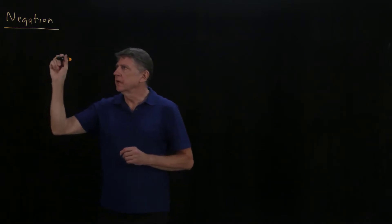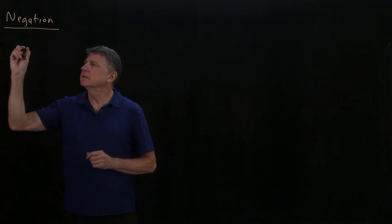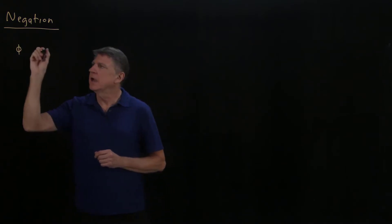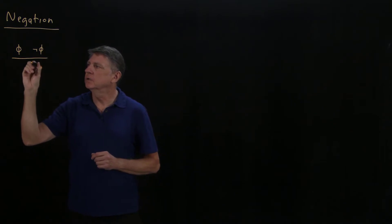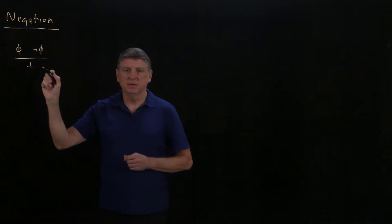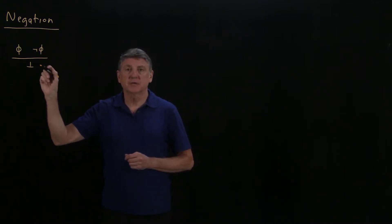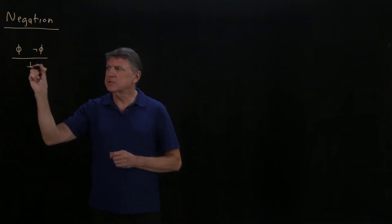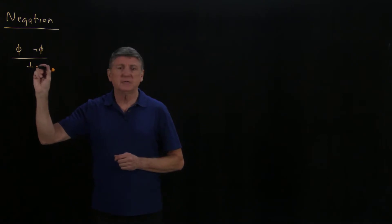The first rule is referred to as negation elimination, and it says that if we see a formula on a line, and on another line in our proof we see the negation of that formula, we can conclude what we call the bottom symbol. The bottom symbol is something that when we get to the semantics of natural deduction we'll call always false, and it looks like the little perpendicular sign from geometry. We pronounce that as bottom.